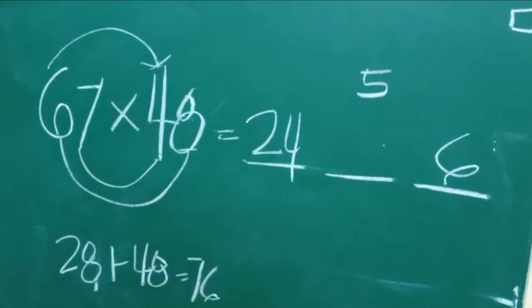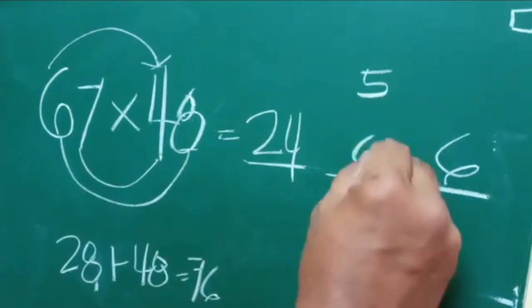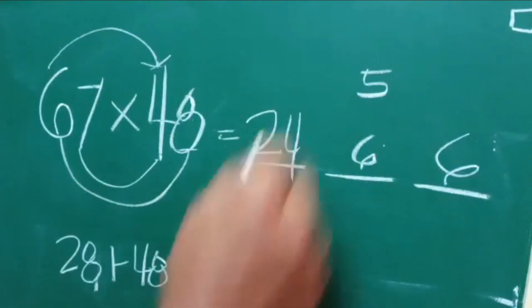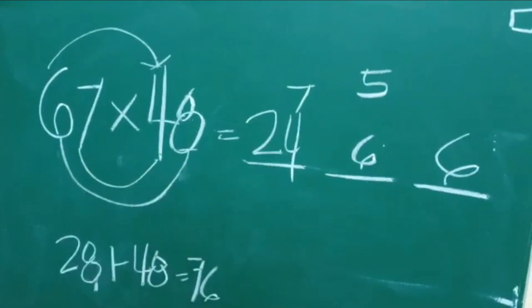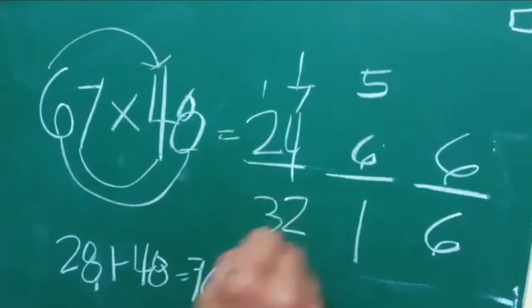So applying the same principle we have to put here 6, we have to put here 7. So the answer for 67 multiplied by 48 is equal to 3,216.